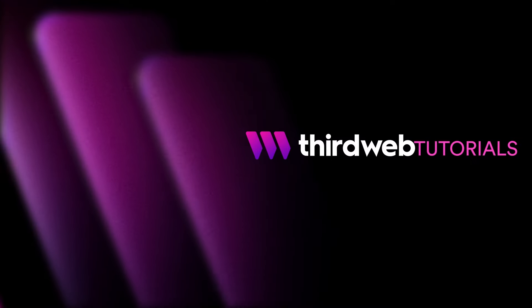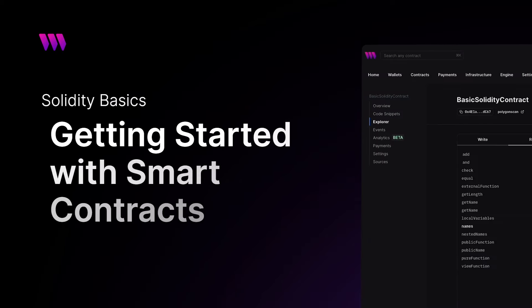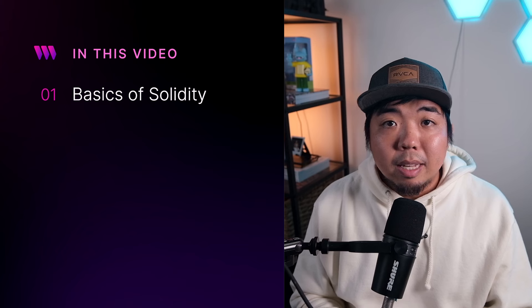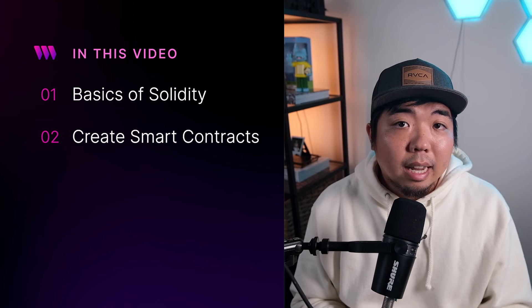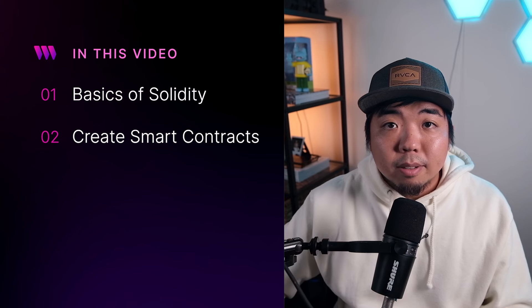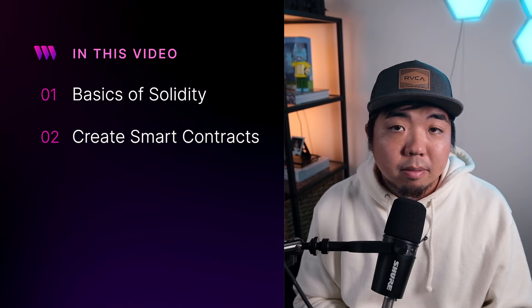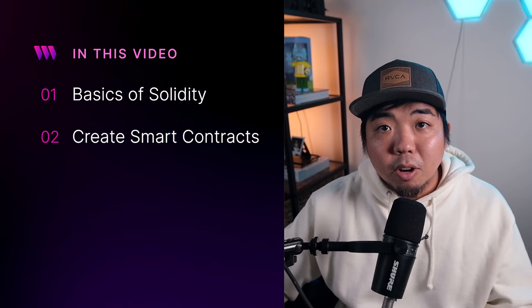Hey everyone, Sean here back with another tutorial video. In today's video, we're going to be going over some basic Solidity. Solidity is the programming language used to generate and create smart contracts. We'll first go over what Solidity is, then we'll go into creating a very simple smart contract and cover variables, functions, operators, conditionals, arrays, and mappings. So let's jump on the computer and get started.